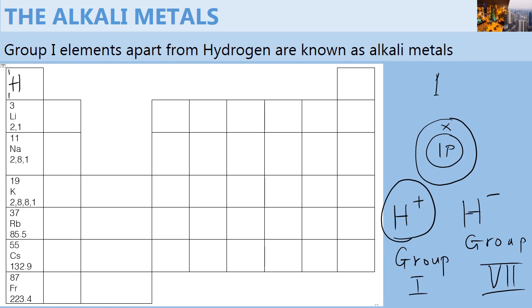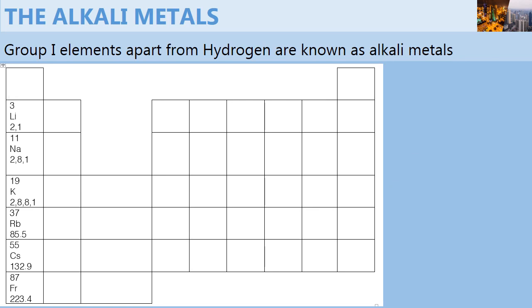And that is why we can also place hydrogen in this location on the periodic table. Now that we have understood why hydrogen is not included in the alkali metals, let us head to the alkali metals. The alkali metals include lithium, sodium, potassium, rubidium, cesium, and francium.